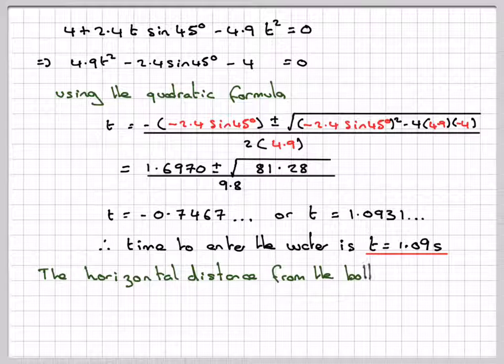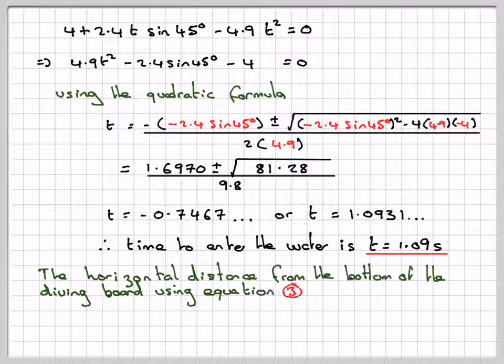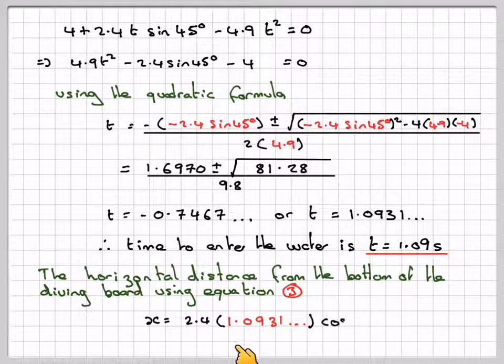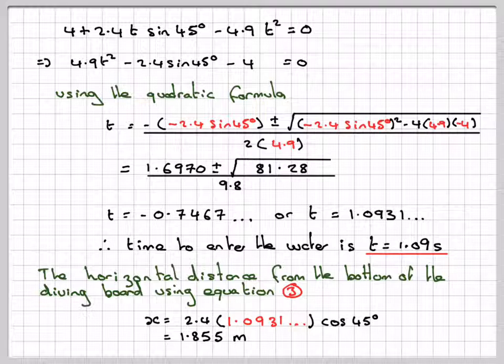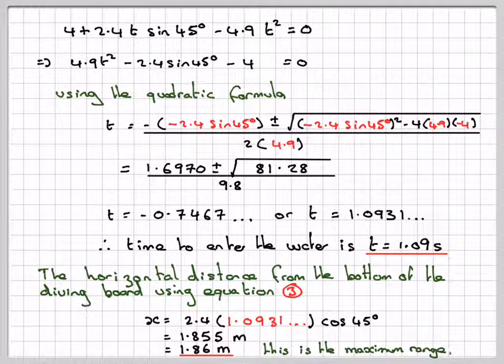The horizontal distance from the base of the diving board, we have to use equation 3. So x will be 2.4 times 1.0931 times cos 45, which gives me 1.855 metres or 1.86 metres. Now actually, because the initial angle was 45 degrees, this is actually the maximum range that Tom can reach. So assuming that this was his best dive.